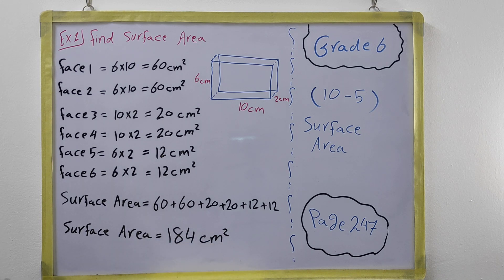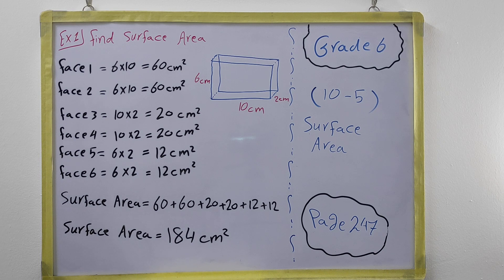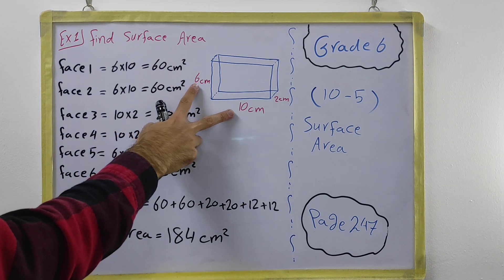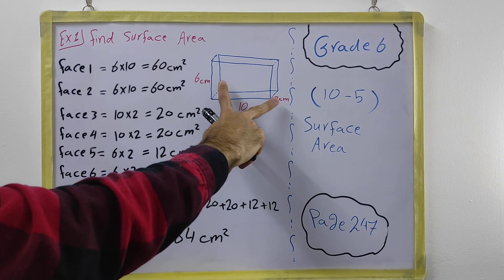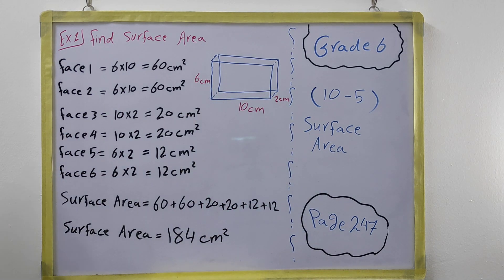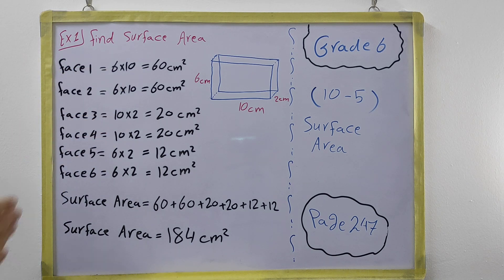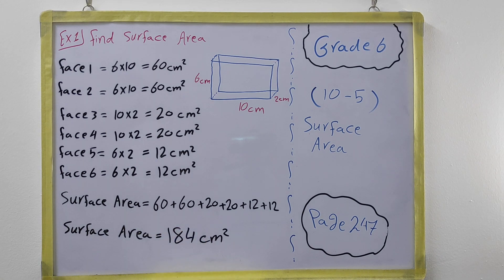For the surface area of a rectangular prism, you always need to find all six faces. First, multiply two of the dimensions together, then another pair, then the last pair. Each pair of faces is the same, so you use each product twice. Add them all together and the result will always be in units squared.